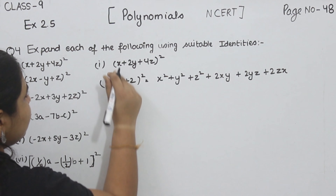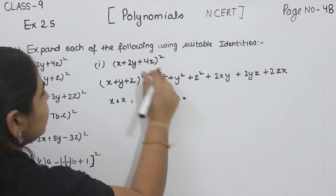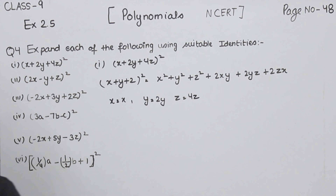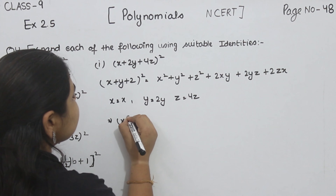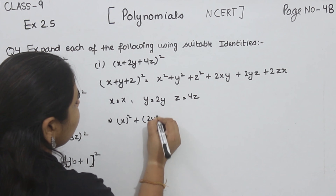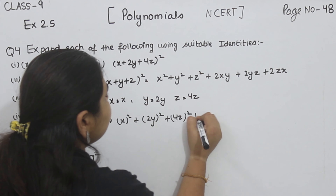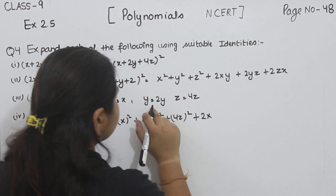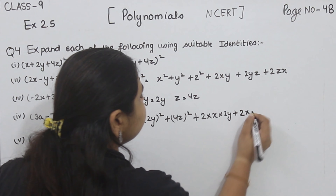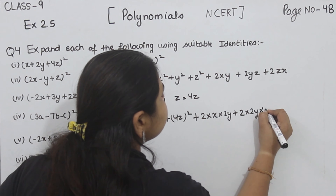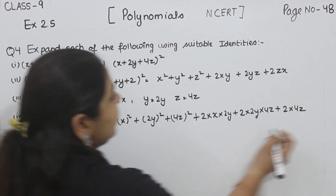Now, here X is equal to X, Y is equal to 2Y, and Z is equal to 4Z. Now we are going to put it in the identity: X square plus Y square plus Z square plus 2XY plus 2YZ plus 2ZX.